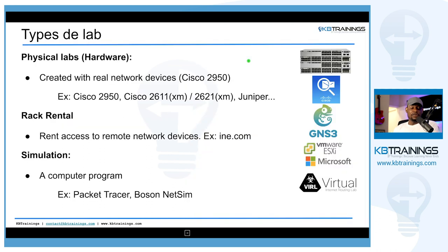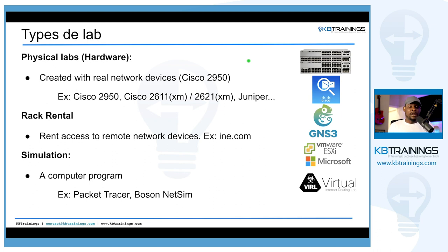First, you can have a physical lab. Physical labs are created with real devices — you go on eBay or get some old switches, routers, and firewalls from someone who works at a company, bring them home, and build your lab. Those are physical, they're great and hands-on. You can practice with devices like the Cisco 2950, Cisco 2611, or some Juniper devices, either at home or at your work environment.